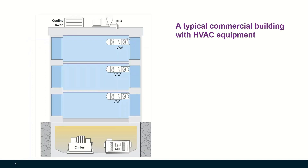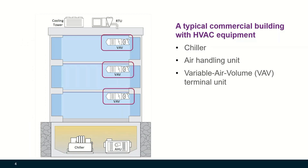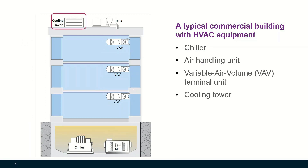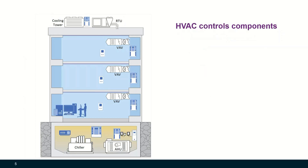Let's look at a typical commercial building with HVAC equipment. You may have a chiller, air handling unit, variable air volume (VAV) terminal units, cooling tower, rooftop unit, fans, pumps, and other mechanical equipment. How are these HVAC equipment controlled?